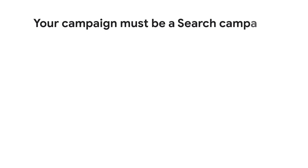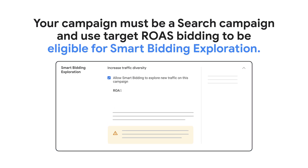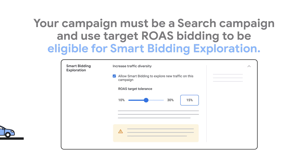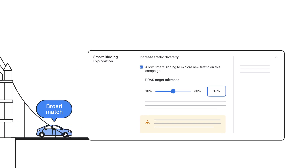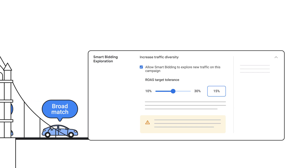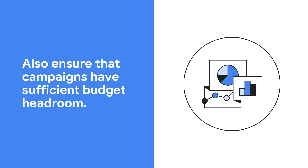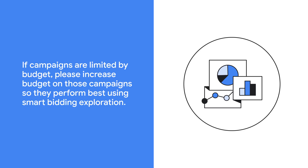First, know that your campaign must be a search campaign and use target ROAS bidding to be eligible for Smart Bidding Exploration. To experience the promoted benefits of exploration, we strongly recommend that these campaigns are well adopted on Broad Match, DSA, or AI Max targeting. Also ensure that campaigns have sufficient budget headroom. If campaigns are limited by budget, please increase budget on those campaigns so they perform best using Smart Bidding Exploration.